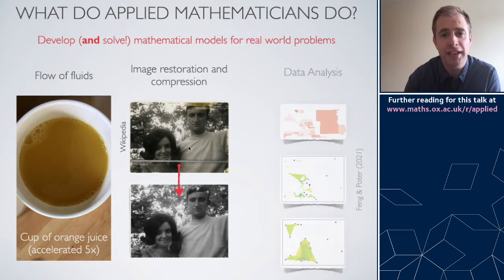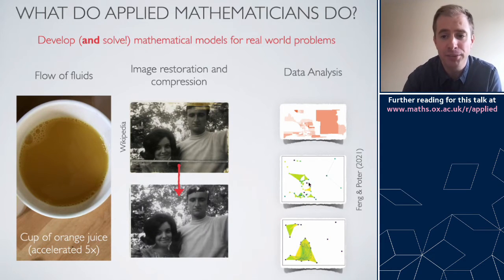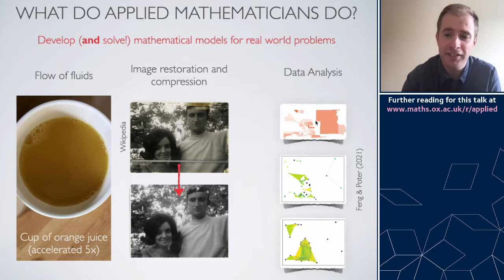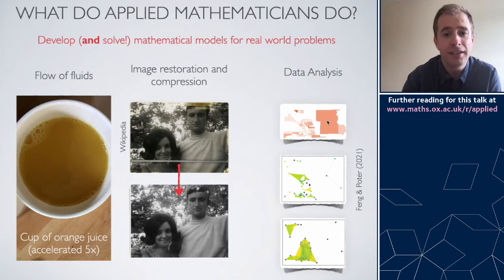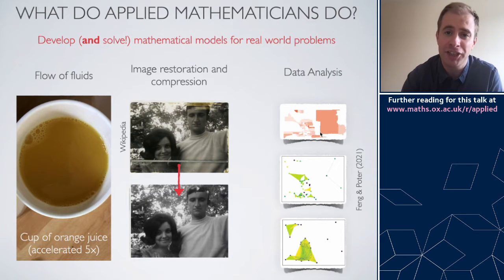Increasingly there's interest in how to analyze and understand data. That involves taking data — for example a map of some of the election results from the US presidential election in 2016 — and trying to understand data at different electoral districts in a way that preserves the geographical information in the map but also allows you to see deeper connections and structure within that data.